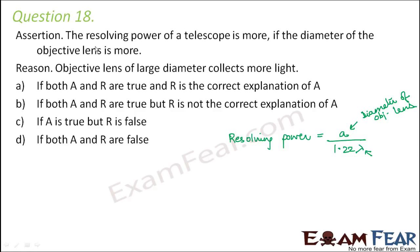Now what is the reason behind this — from where do we get this expression? The reason given is: the objective lens of large diameter collects more light. If the lens is of more diameter, it allows more light to pass through it. When more light is collected, the image formed will be more bright, and as a result the resolving power will also be more. So the assertion is correct, the reason is also correct, and the reason is the correct reason of the assertion.